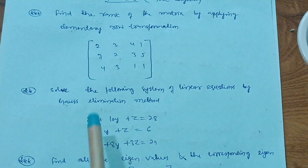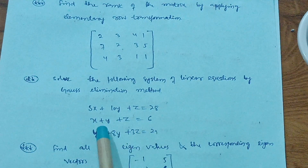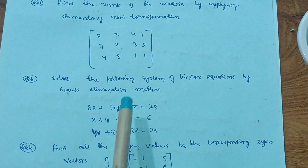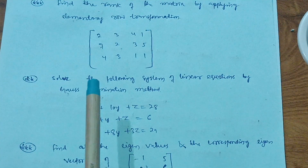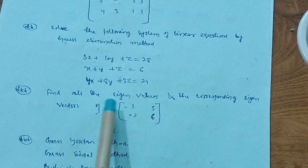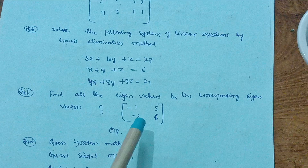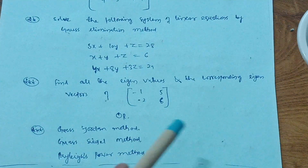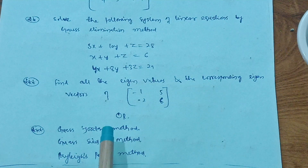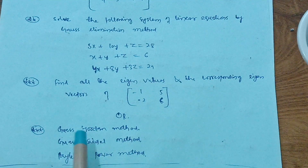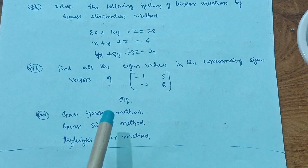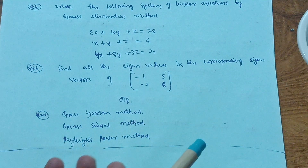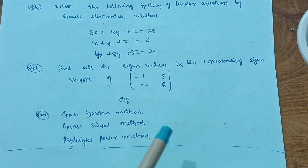The next important question is: solve the system of linear equations by the Gauss elimination method. For example, 5x + 10y + z = 28, x + y + z = 6, 4x + 8y + 3z = 29. After that, find all eigenvalues and corresponding eigenvectors of a given matrix — for example, the matrix [-1, 5; -2, 6]. Also cover Gauss-Jordan method, Gauss-Seidel iterative method, and Rayleigh's power method to find the dominant eigenvalue and eigenvector.